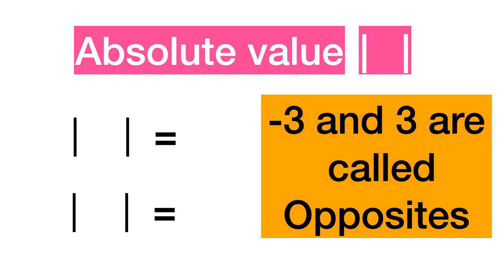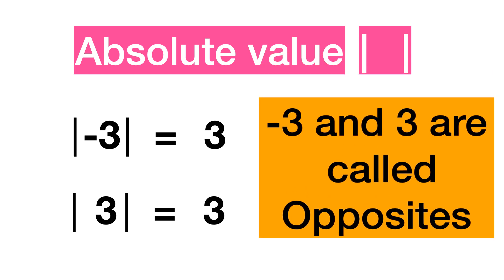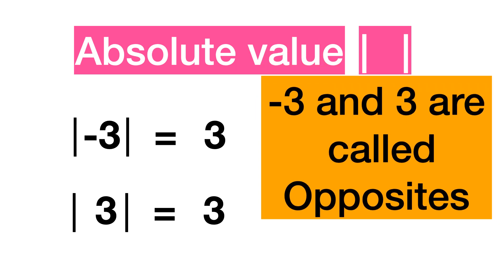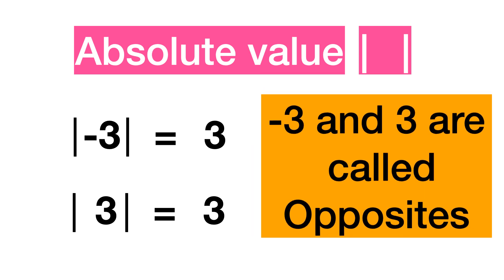If two numbers are at the same distance from 0, as in the case of 3 and minus 3, they are called opposites. Opposites have the same absolute value since they are both at the same distance from 0.